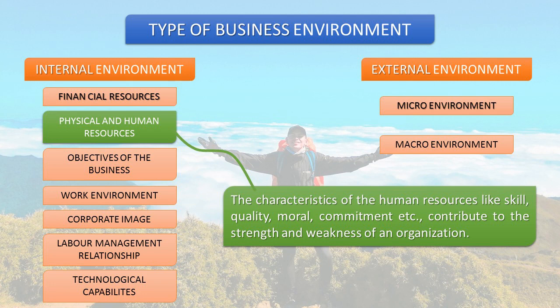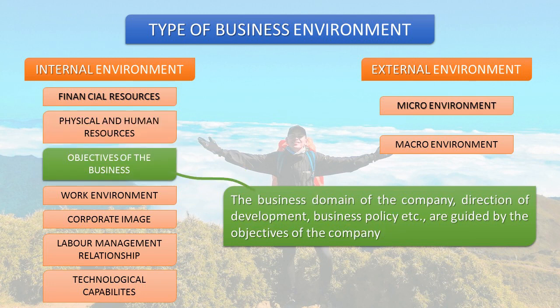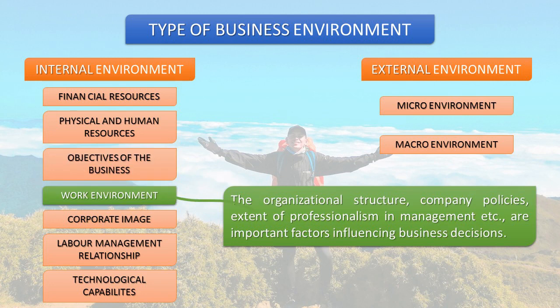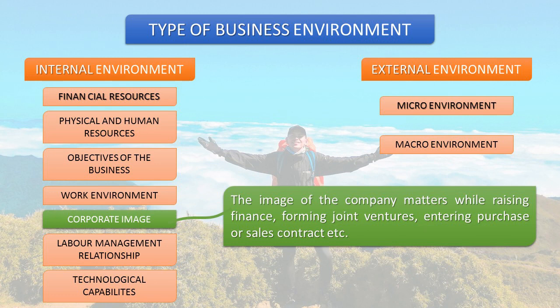Physical and human resources: the characteristics of human resources like skill, quality, moral commitment, etc., contribute to the strength and weakness of an organization. Objectives of business: the business domain of the company, direction of development, business policy, etc., are guided by the objectives of the company. Work environment refers to the organizational structure, company policies, and extent of professionalism in management — all of which are important factors influencing business decisions.